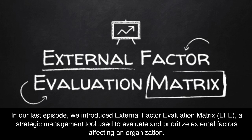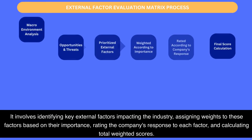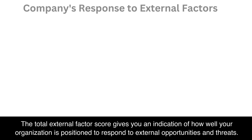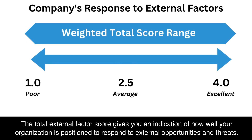In our last episode, we introduced the External Factor Evaluation Matrix, a strategic management tool used to evaluate and prioritize external factors affecting an organization. It involves identifying key external factors impacting the industry, assigning weights based on their importance, rating the company's response to each factor, and calculating total weighted scores. The total external factor score gives you an indication of how well your organization is positioned to respond to external opportunities and threats.